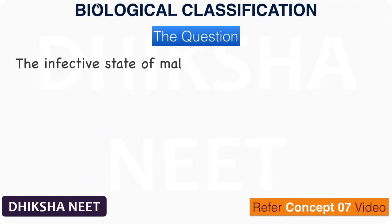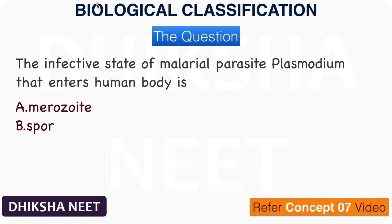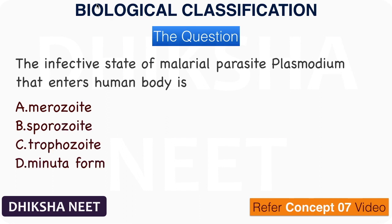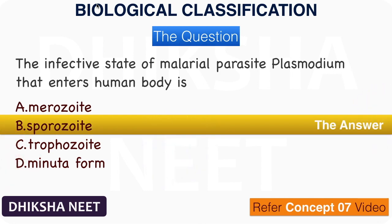The question: The infective state of malarial parasite Plasmodium that enters the human body is — A. Merozoite, B. Sporozoite, C. Trophozoite, D. Minutiform. The answer is option B. Sporozoite.